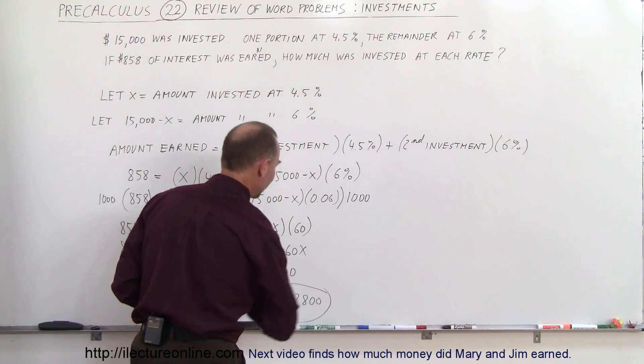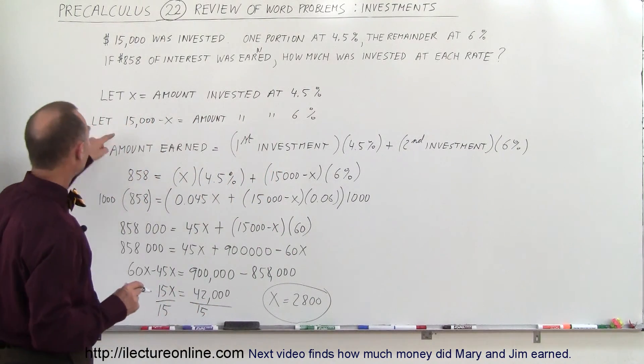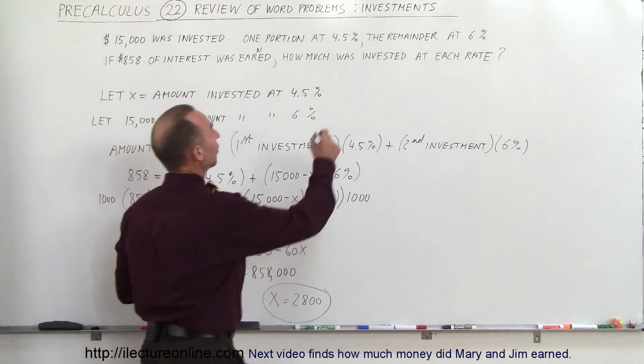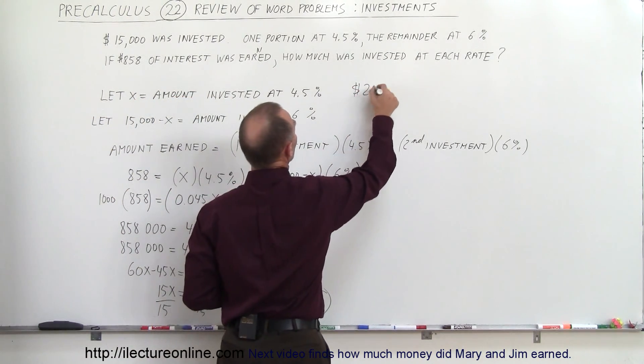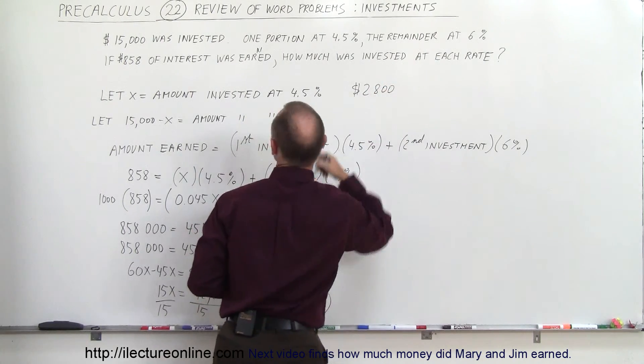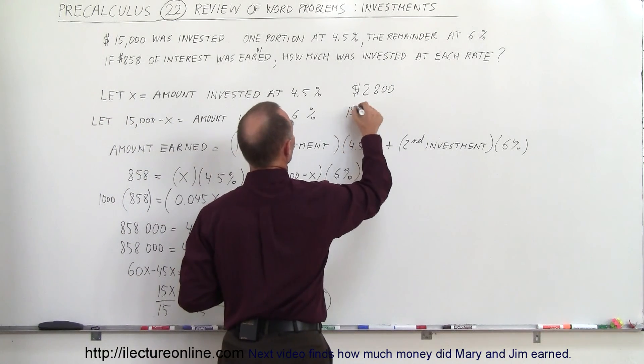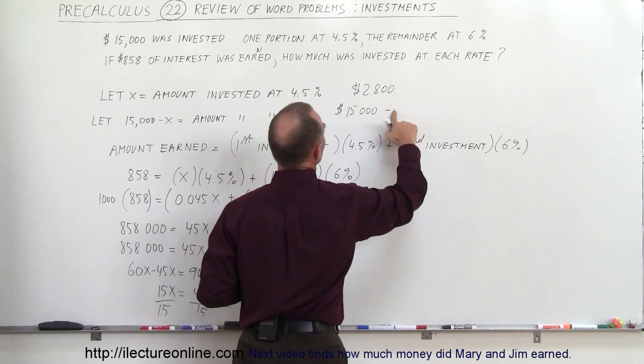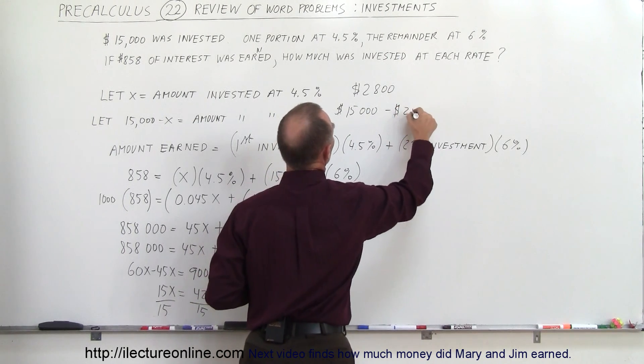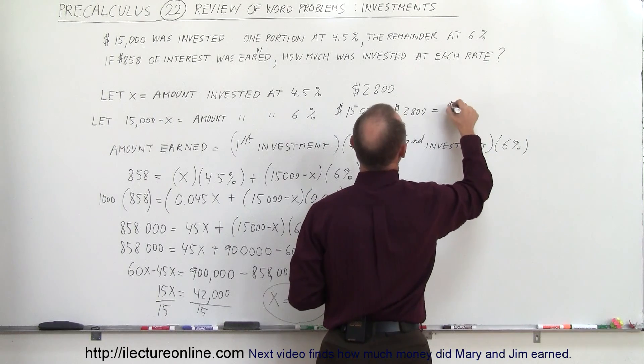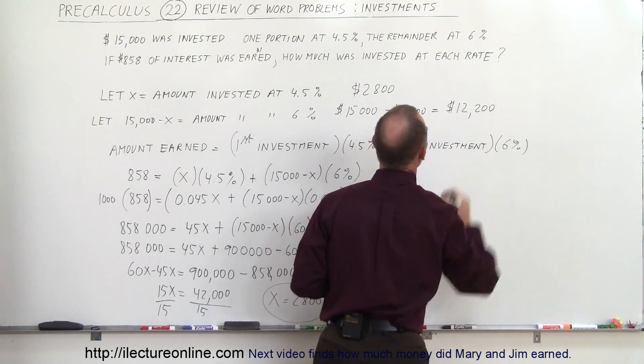Now we go back and see how we defined the variable x. x was the amount invested at 4.5%. That means we invested $2,800 at 4.5%. And the remainder, 15,000 minus 2,800, and let me put my dollar sign here, 2,800 equals, that would be $12,200 at 6%.